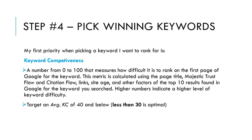Step four is picking the winning keyword. My first priority when picking a keyword I want to rank for in Google is keyword competitiveness. This is a number from zero to 100 that measures how difficult it is to rank on the first page of Google for that keyword. This metric is calculated using the page title, majestic trust flow, and citation flow,